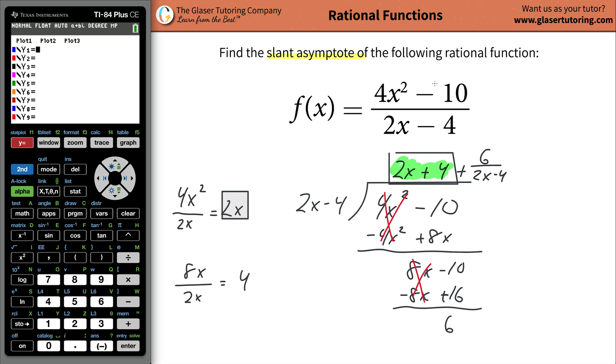Graph this original function: open parentheses, do 4x squared minus 10, close parentheses, divided by, open parentheses, 2x minus 4, close them. And now hit graph. There's the function, and you can kind of almost see that slant asymptote over here. You can kind of see it.